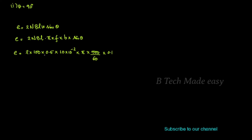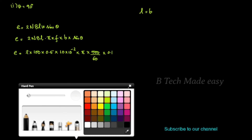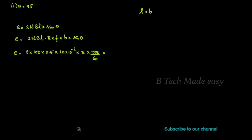Substituting: E = 2 × 100 × 0.5 × (10 × 10⁻²) × π × (500/60) × (10 × 10⁻²) × sin 90°. Since sin 90° = 1 and it is a square coil so l = b = 10 × 10⁻² metres. The result is E = 26.17 volts.